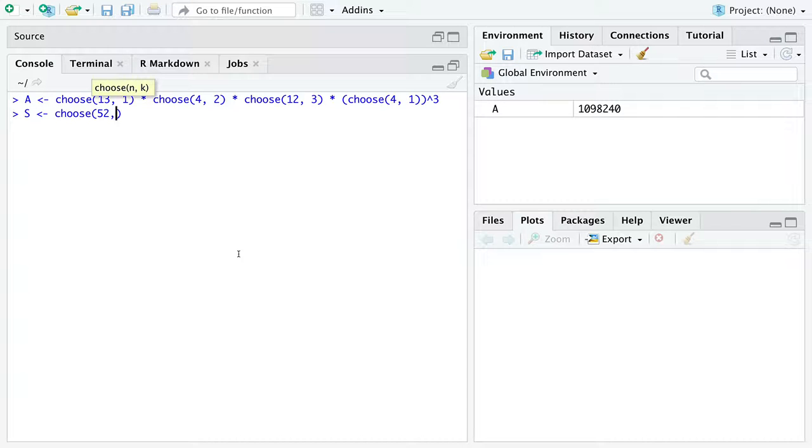We can easily calculate the number of five-card hands. To get the probability, just divide those two integers. There is a 42% chance of getting a pair in five-card poker.